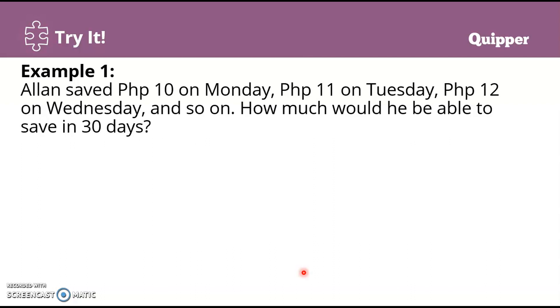11 pesos on Tuesday, 12 pesos on Wednesday, and so on. How much would he be able to save in 30 days? This is an application of arithmetic series because we are just going to add all of his savings from Monday, from the first day until the 30th day.